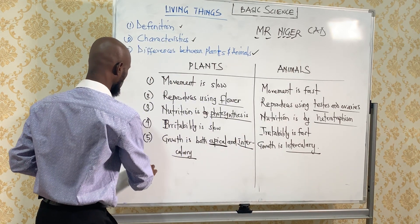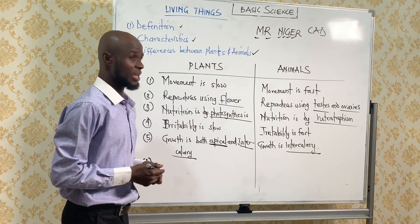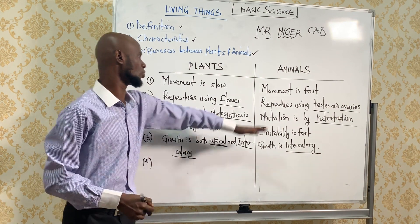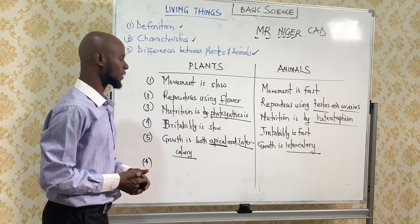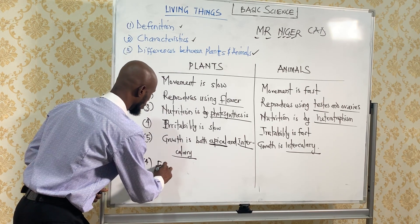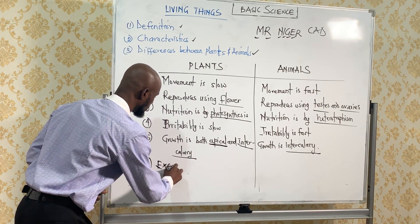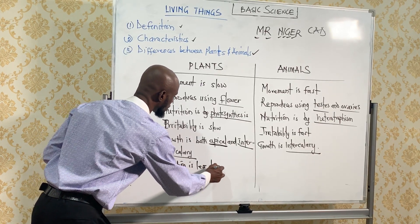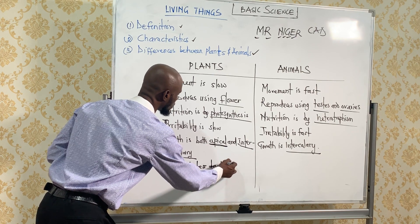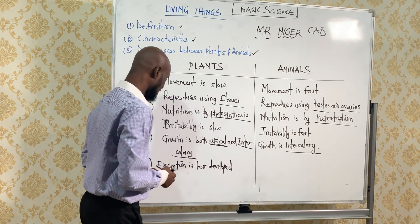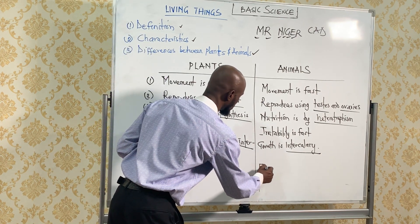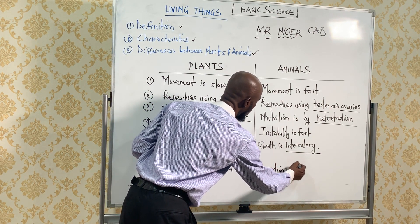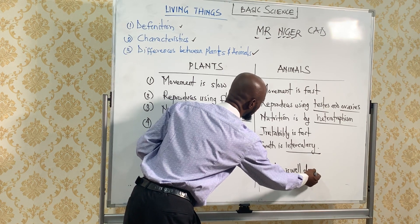Let's talk about excretion. The excretory system is less developed in plants, while excretion is well developed in animals.